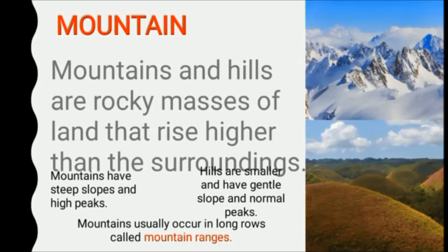Mountains and hills occur in long rows, and these long rows of mountains are called mountain ranges. The Himalayas, which is in the north of India, is the highest mountain range in the world.